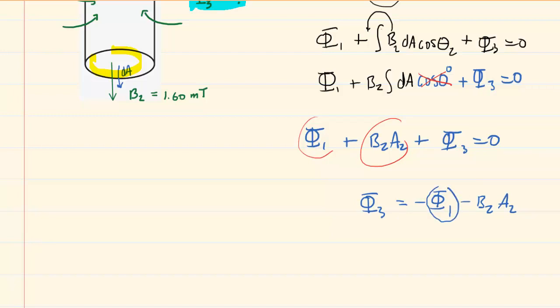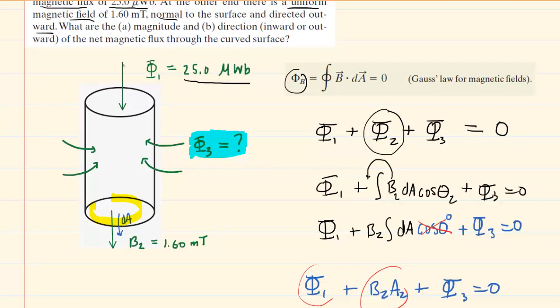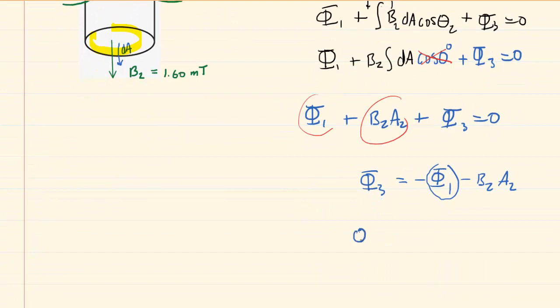Now, notice how we've drawn that. The magnetic flux is entering the surface, and anytime you have a magnetic flux that is entering the Gaussian surface, that actually makes it a negative value for that magnetic flux. That's very important. So when we go to plug in the value of the magnetic flux one, we have to make sure we insert a negative value. And in addition, there's that negative sign from the algebraic manipulation.